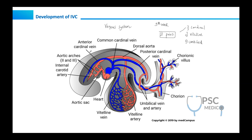The veins in the image are depicted in blue color as you can see. We have a cardinal vein which is anterior and also another one which is posterior. Both unite and form a common cardinal vein which drains into the sinus venosus. Similarly, we have an umbilical vein and also the vitelline vein which is coming from the yolk sac.